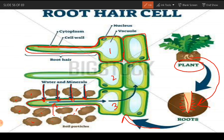The soil particles, shown in brown, have gaps between them that are filled with water in which many mineral salts are dissolved. This water comes in contact with the surface of the root hair cells and is absorbed. The elongated structure of the root hair cell increases contact with surrounding soil particles, enabling greater absorption of water and minerals, which are then passed to the xylem vessels.